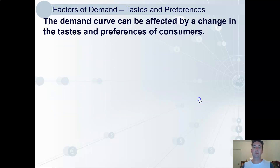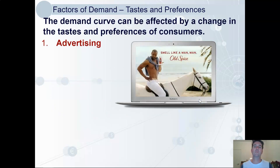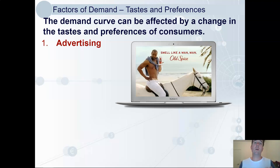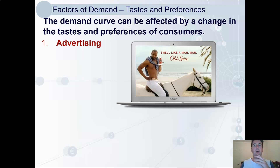So tastes and preferences. We can split this into three ideas. First, we get exposed to advertising. Advertising works — we know it works because they spend billions of dollars on it every year. It must work. It makes us demand a higher quantity at each price.